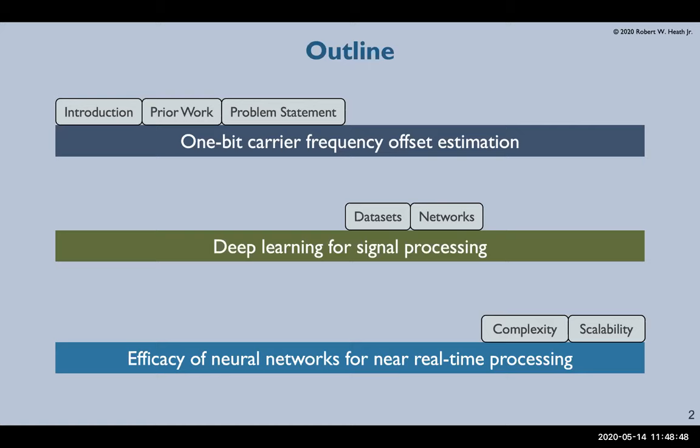Afterwards we'll move into our contributions which begin by taking a look at the data and dataset variations as well as the networks we found to perform well. Finally we will look at complexity considerations for neural networks, specifically looking at real-time and near real-time processing.